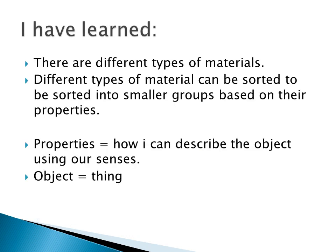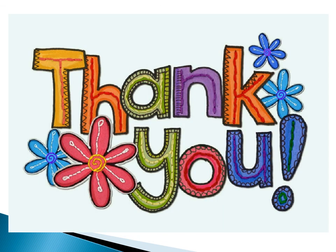So, what have we learned in this lesson? There are different types of materials, and different types of materials can be sorted into smaller groups based on their properties. I can look and describe them, and then put them into groups. Properties means how I can describe the object. Object means thing. We describe the object using our five senses. Thank you, guys. Wish you all the luck and see you soon.